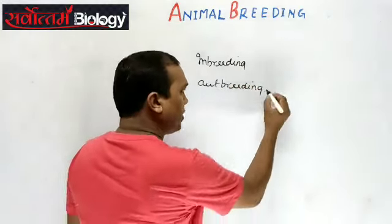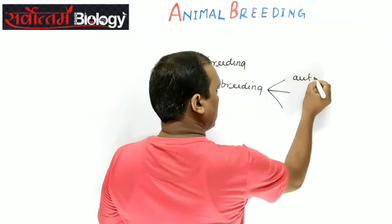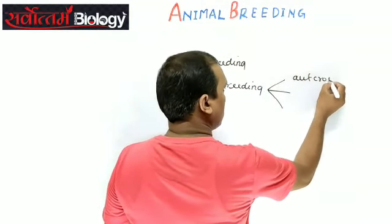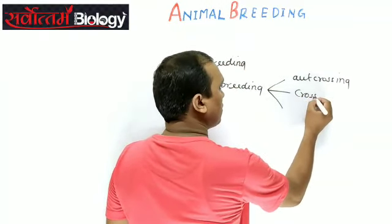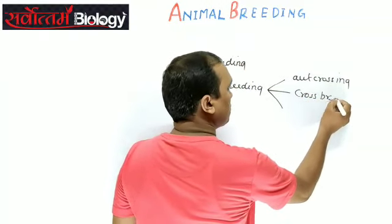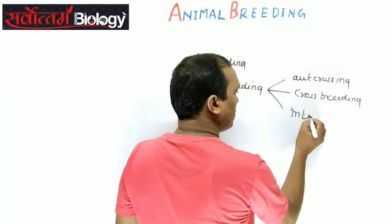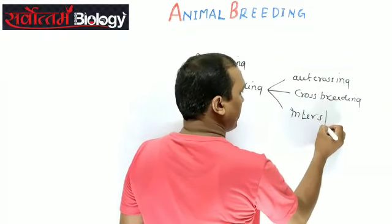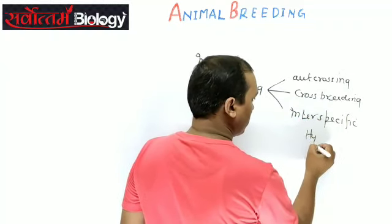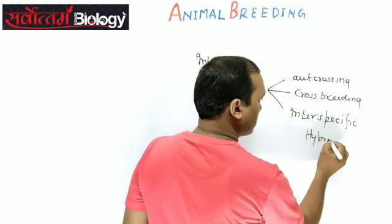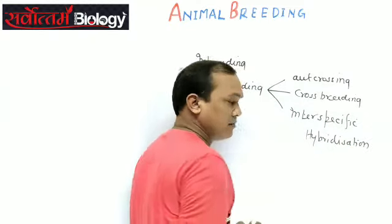Outbreeding is of three types: out-crossing, cross-breeding, and interspecific hybridization.